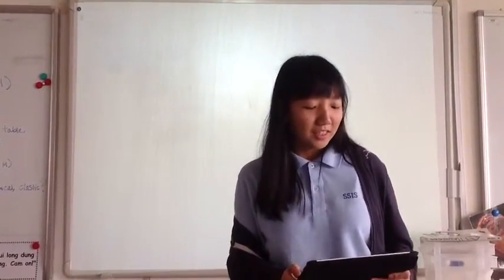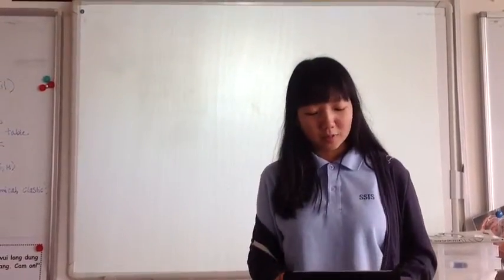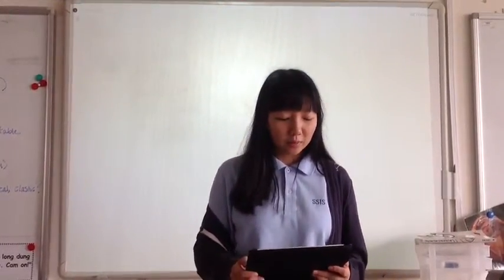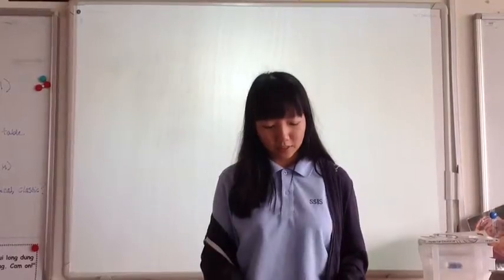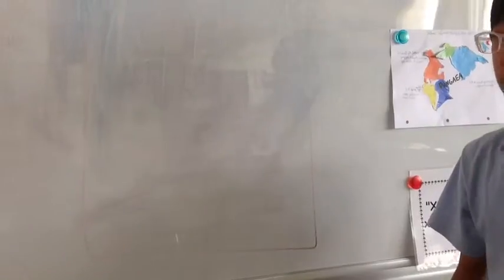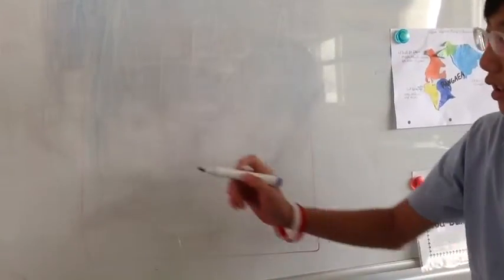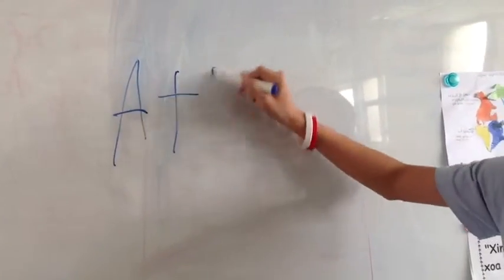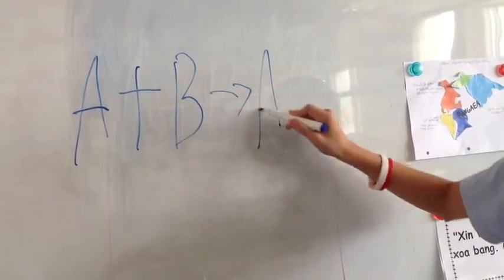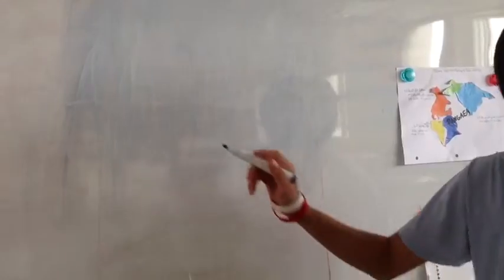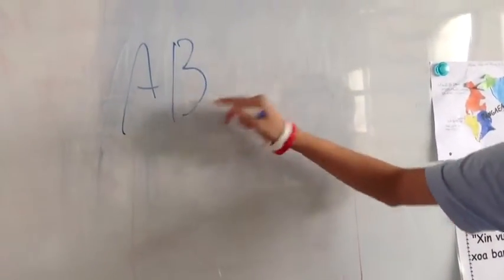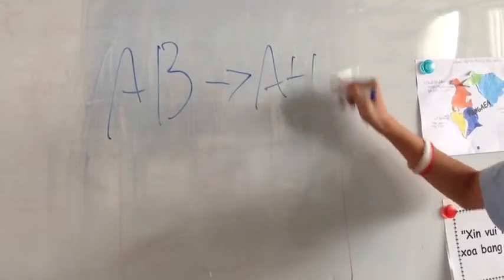So let's wrap it all up. Synthesis is when two different substances or compounds bond with each other to create a complex compound. Decomposition is when a complex compound is broken down into two or more different substances or compounds. The equation for a synthesis reaction is A plus B gives AB, and the equation for decomposition is AB gives A plus B.